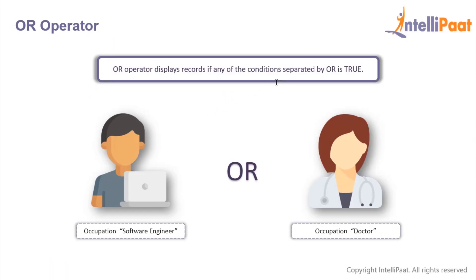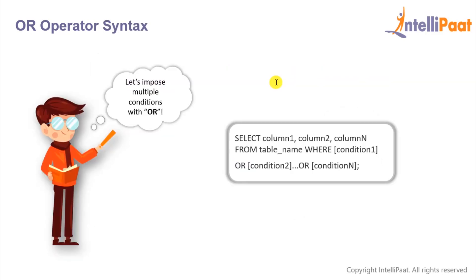Then we have the OR operator. The OR operator displays those records where at least one of the conditions is satisfied. For example, if we want to filter out either a software engineer or a doctor, we can use the OR operator. Similar to the AND operator, after the first condition we follow it up with the OR operator and then give the second condition.